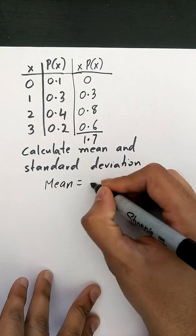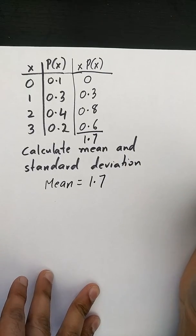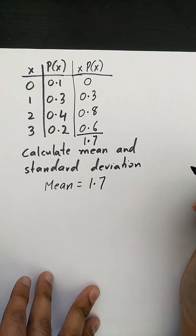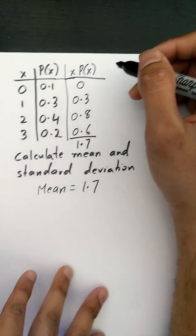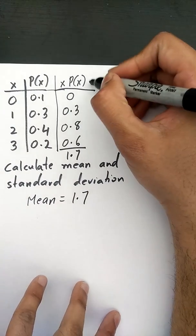So we know the mean for this example is 1.7. The next thing we want to do is we want to find our standard deviation, so we're going to continue in this table right here.